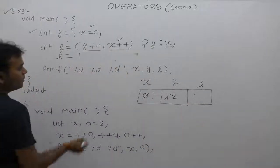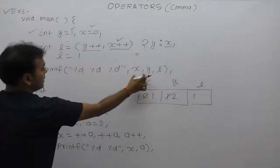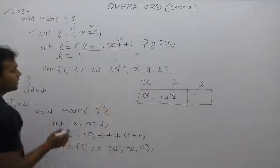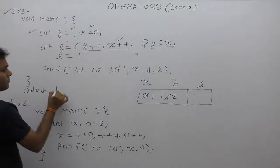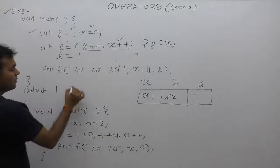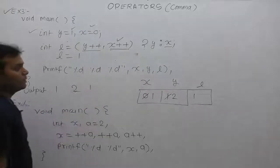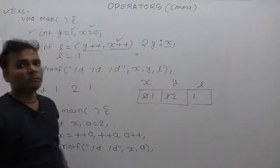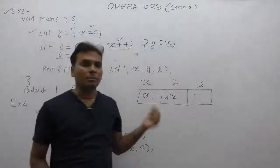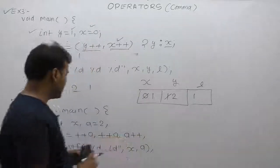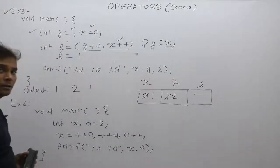Now the printed values of x, y, and n are 1, 2, and 1 respectively. This is the result of Example 3.